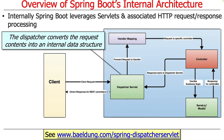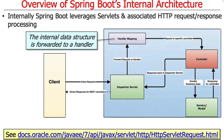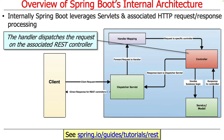The request is sent over to something called the dispatcher servlet. The dispatcher servlet is this infrastructure piece that takes the incoming HTTP request — GET, POST, PUT, DELETE, and so on — and converts it into an internal data structure that it knows about. That data structure is then forwarded to a handler. There are various links at the bottom of the slides if you want to learn more about each of these different steps.